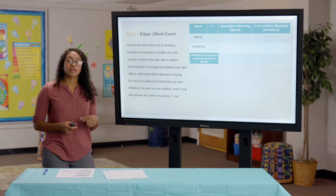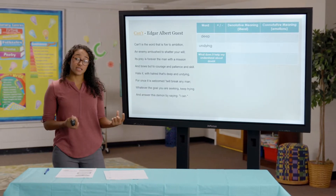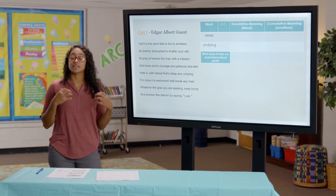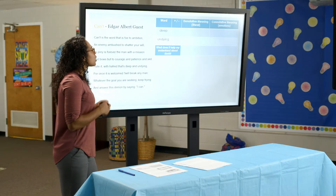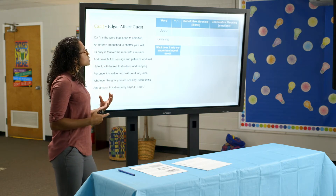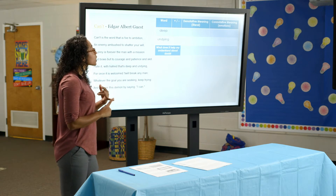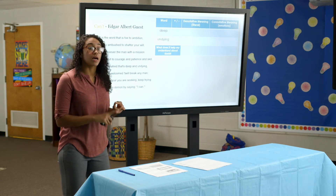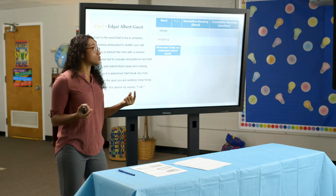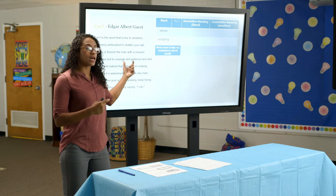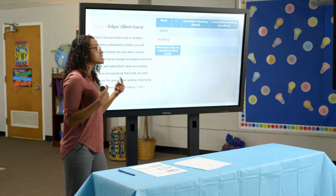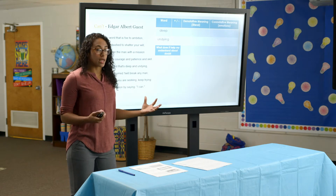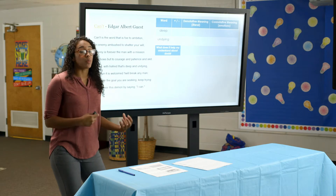Now you're going to follow the same steps and complete the same chart to determine the meaning and impact of some words in this poem. We're going to look at the fifth line: 'Hate it with hatred that's deep and undying' — and we know 'it' is doubt. I want you to pause the video and determine: are 'deep' and 'undying' negative? What is their denotation — the literal meaning? What emotions do you associate with 'deep hatred' and 'undying hatred?' And based on that, what does it help you understand about doubt or how you should handle it? Pause the video and fill out the chart.